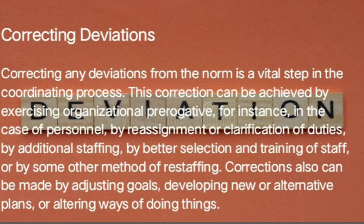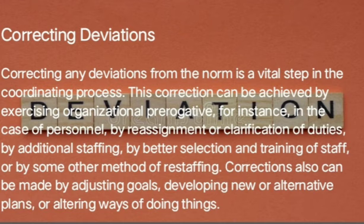Correcting deviations. Correcting any deviations from the norm is a vital step in the coordinating process. This correction can be achieved by exercising organizational prerogative — for example, in the case of personnel, by reassignment or clarification of duties, by additional staffing, by better selection and training of staff, or by some other method of restaffing.